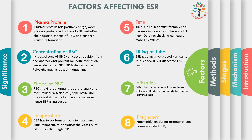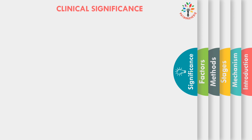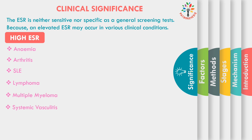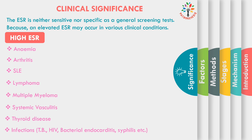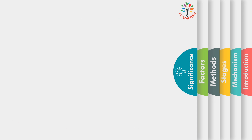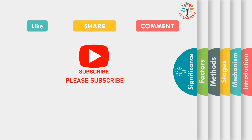Now I am going to talk about the clinical significance of ESR. The ESR is neither sensitive nor specific as a general screening test, because an elevated ESR may occur in various clinical conditions. High ESR values are seen in anemia, arthritis, SLE (systemic lupus erythematosus), lymphoma, multiple myeloma, systemic vasculitis, thyroid disease, and infections like TB, HIV, bacterial endocarditis, and syphilis. Low ESR values are seen in polycythemia, sickle cell anemia, spherocytosis, and dehydration. If you like this topic, please like, share, and comment, and if you are new to my channel, please subscribe. Thank you.